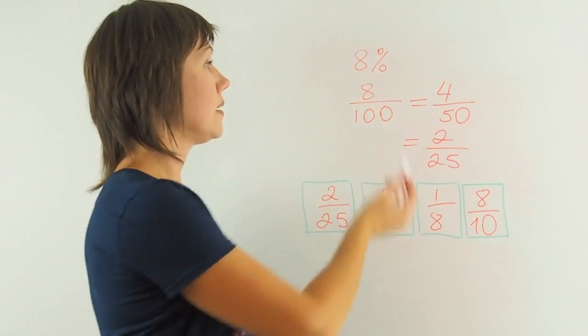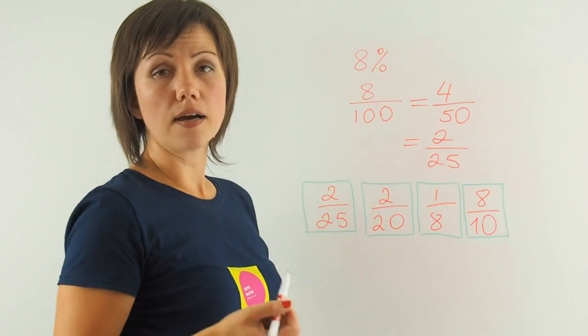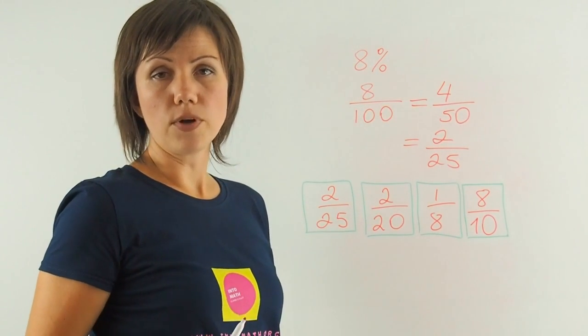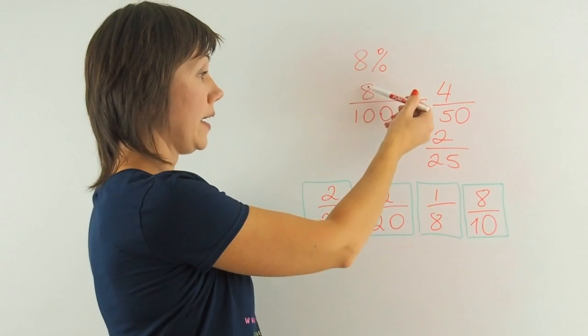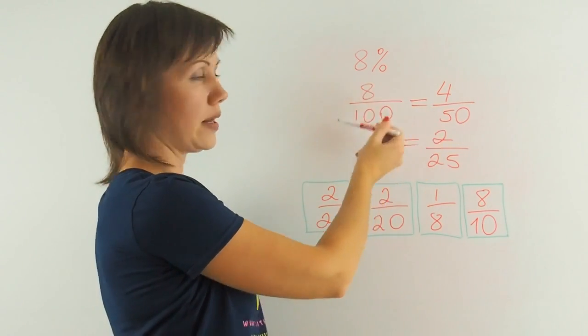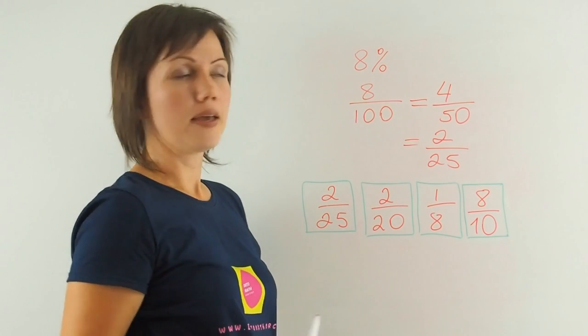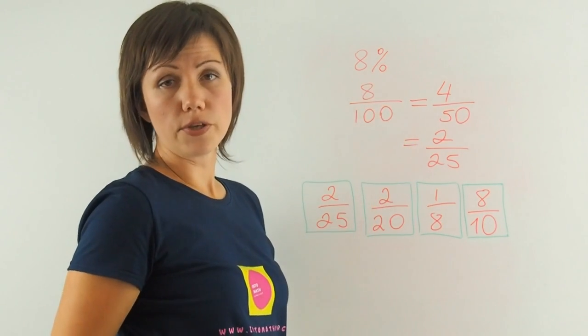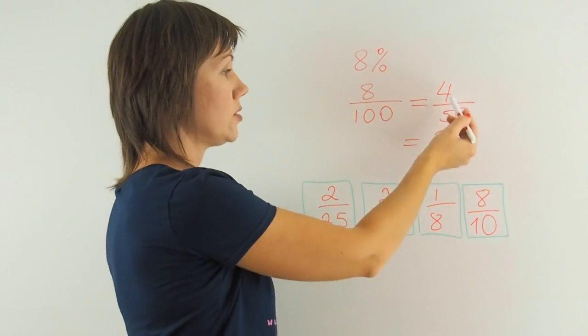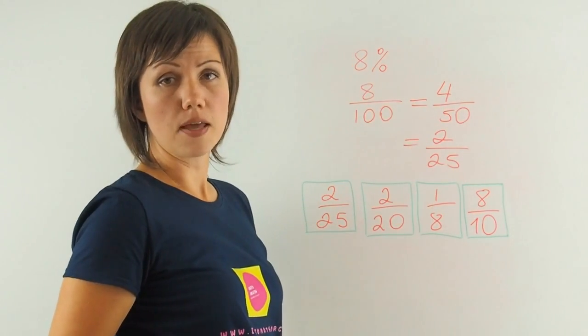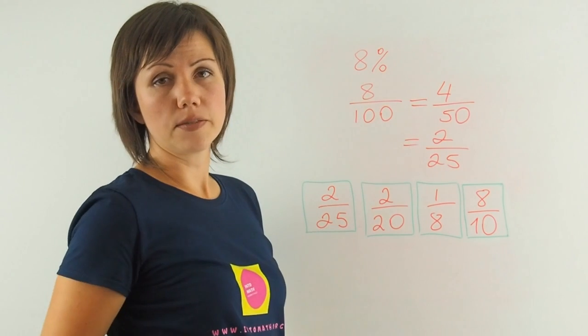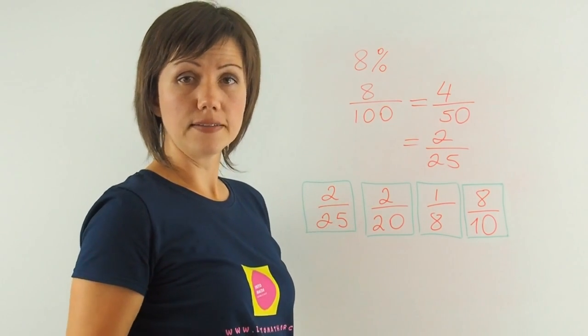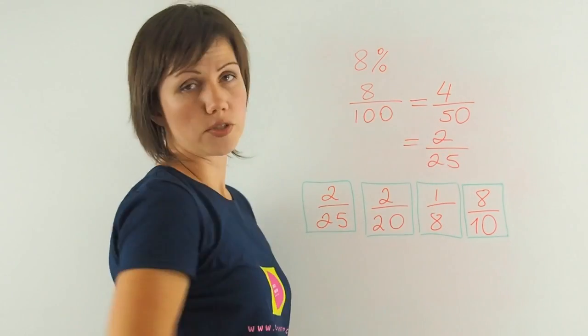So once again, 8% out of 100 can be recorded as a fraction, 8 out of 100, 8 hundredths. Both of these numbers can be divided by 2 to get 4 over 50, and then 4 over 50 can be divided by 2 again to get 2 over 25.